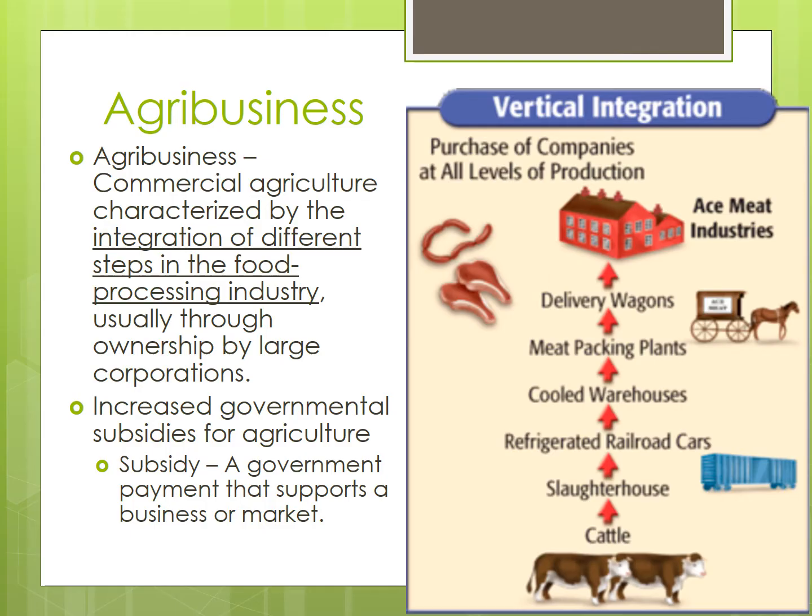We also see agribusinesses doing their own in-house research into genetic modification. One example is the herbicide-resistant Roundup Ready GMO seeds. The agribusiness Monsanto is not just involved in the primary sector, but also in the secondary, tertiary, and quaternary levels. And when a single company controls all those different steps from extraction to sales, it is known as vertical integration. This helps improve the efficiencies of commercial agriculture and thereby increase profits by reducing costs.